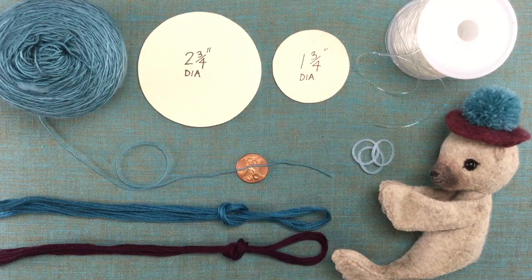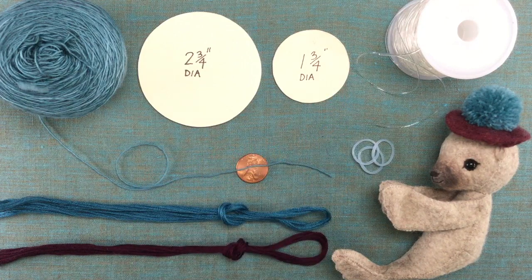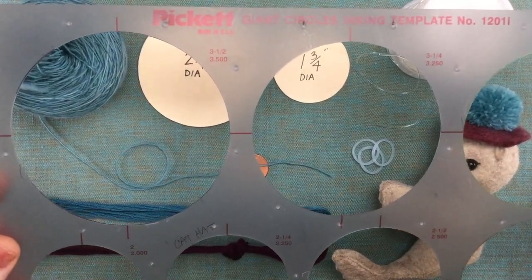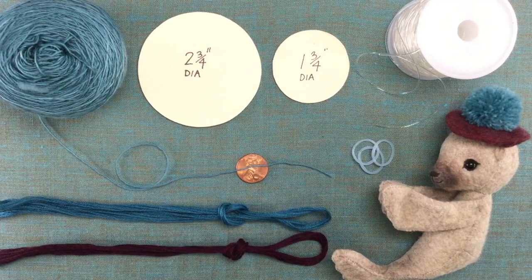I cut these two out of a manila folder using a circle template that I had handy, but I'll make a pattern for you that has the two sizes just in case you don't have a circle template.